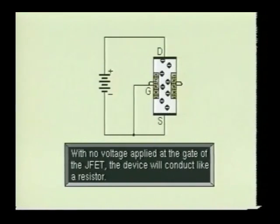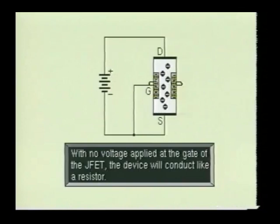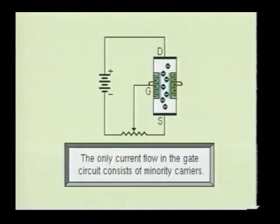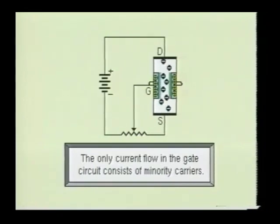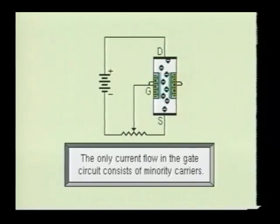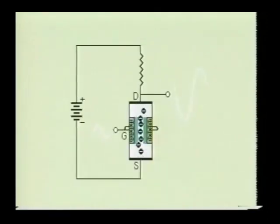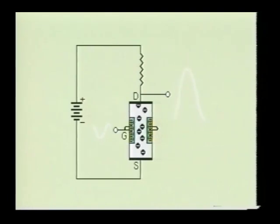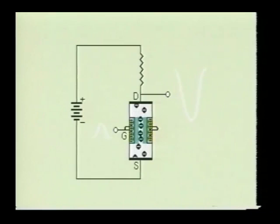If a bias voltage is not applied to the gate of the device, the current will flow through the transistor as if it were flowing through a resistor. When the gate of the junction field effect transistor is reverse biased, the only current which will flow into the gate sections is the reverse current consisting of minority charge carriers. Therefore, the gates of the JFET will draw virtually no current. Amplification of the JFET is made possible by increasing or decreasing the gate voltage. The corresponding drain current will vary accordingly to produce an amplified reproduction of the input signal applied at the gate.